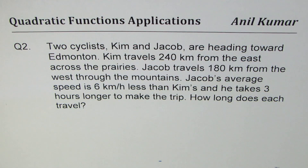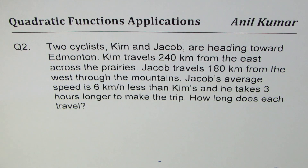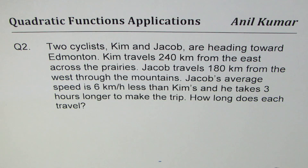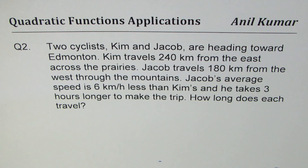I am Anil Kumar sharing with you a few word problems on application of quadratic functions. Here is question number two. Two cyclists Kim and Jacob are heading towards Edmonton. Kim travels 240 kilometers from the east across the prairies. Jacob travels 180 kilometers from the west through the mountains. Jacob's average speed is 6 kilometers per hour less than Kim's and it takes 3 hours longer to make the trip. How long does each travel?